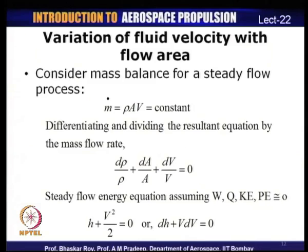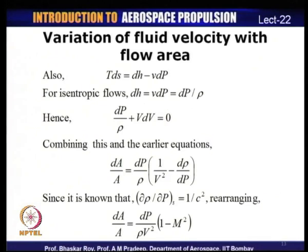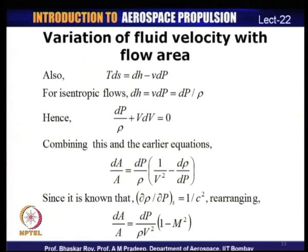Combining the energy equation with the mass balance and simplifying: dA/A = (dP/ρ)(1/V² − dρ/dP). It is known that dρ/dP at constant entropy equals 1/C². Applying this: dA/A = (dP/ρV²)(1 − M²), where M² arises because V²/C² = M².